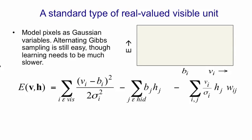The equation looks like this. The first term on the right-hand side is a kind of parabolic containment function that stops things blowing up. So the term in that sum contributed by the i-th visible unit is parabolic in shape. It's a parabola with its minimum at the bias of the i-th unit. And as the i-th unit departs from that value, we add energy quadratically. So that tries to keep the i-th visible unit close to bi.